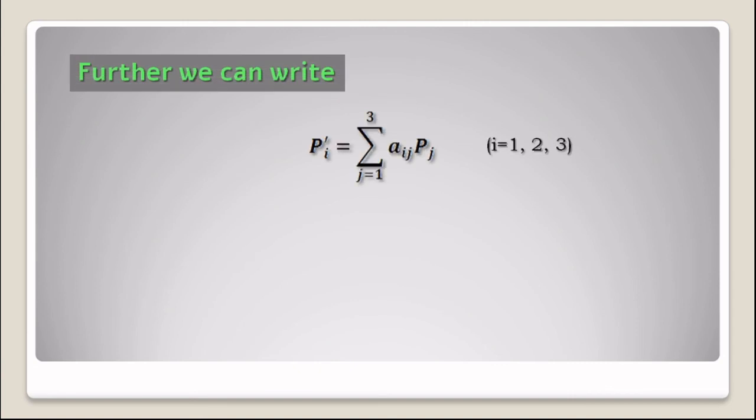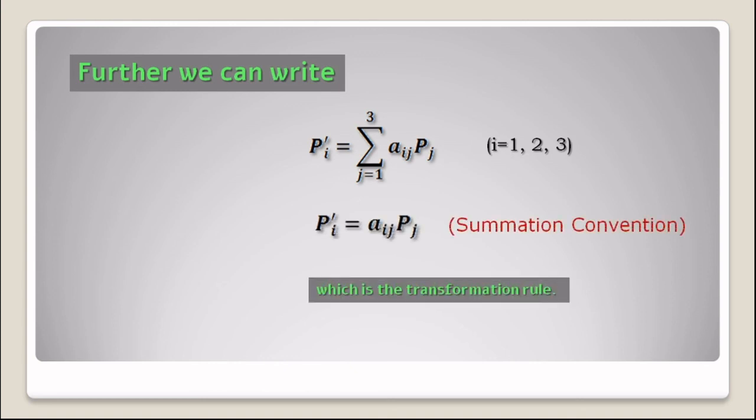Further, we can write pᵢ' = Σⱼ(j=1 to 3) aᵢⱼpⱼ, where i goes from 1, 2, and 3. Using the Einstein summation convention, we can write pᵢ' = aᵢⱼpⱼ, which is the transformation rule for any tensor from one coordinate system to another coordinate system.